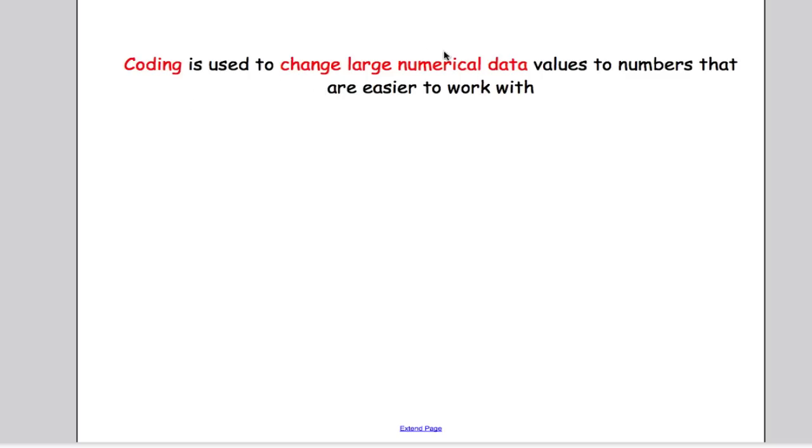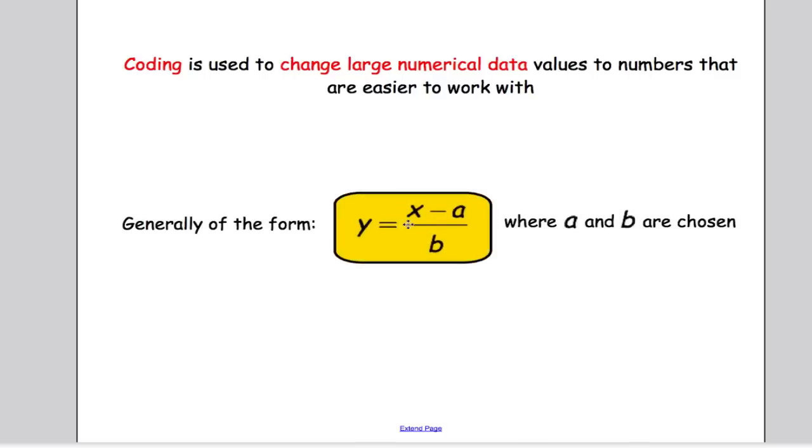Coding is used to change large numerical data values into numbers that are easier to work with, and generally it comes in the form y equals x minus a over b, where a and b are to be chosen. If we have particularly large x values or data points, we can change them by taking away a number and then maybe dividing by a number to transform it to something that's a little bit easier to use.